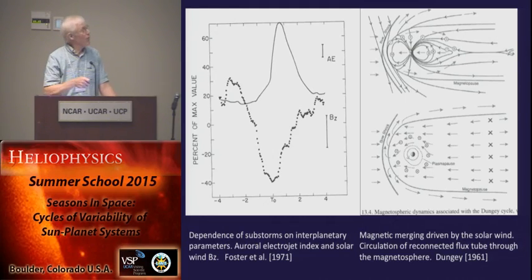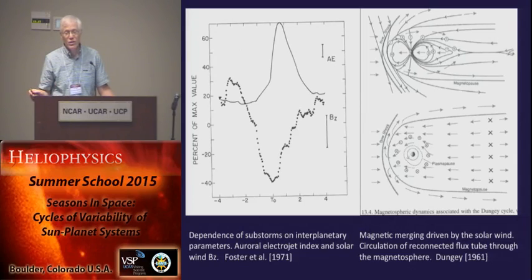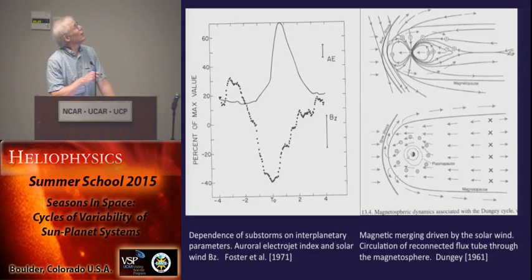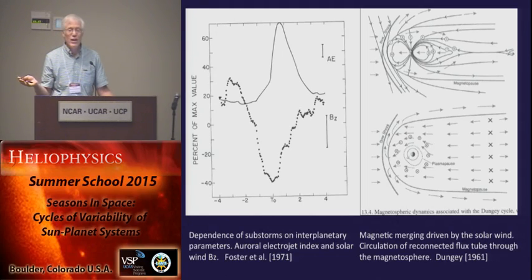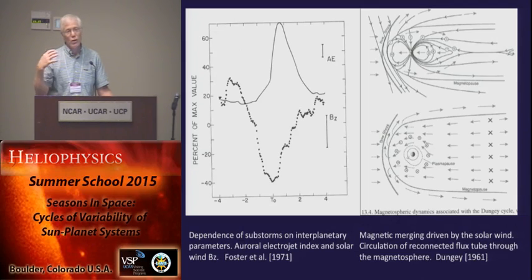My very first graduate student publication was a statistical study of isolated substorms and their relationship to the solar wind. This is what they call superposed epoch analysis, using the signatures of field-line currents to get T equals zero for a substorm, taking substorms isolated by three hours from any other activity — really isolated substorms — individual pumping of energy into the magnetosphere and its release.